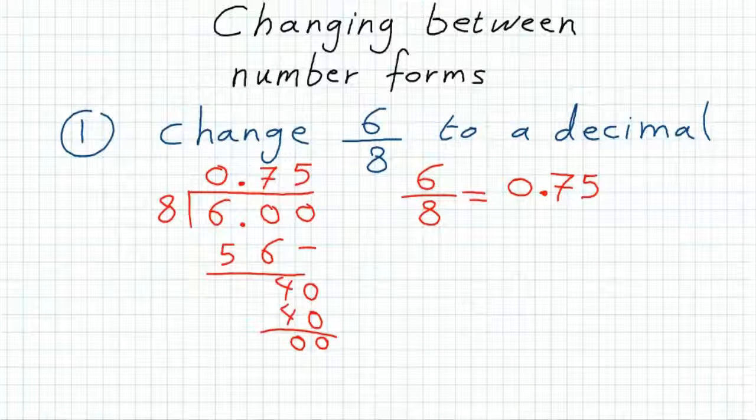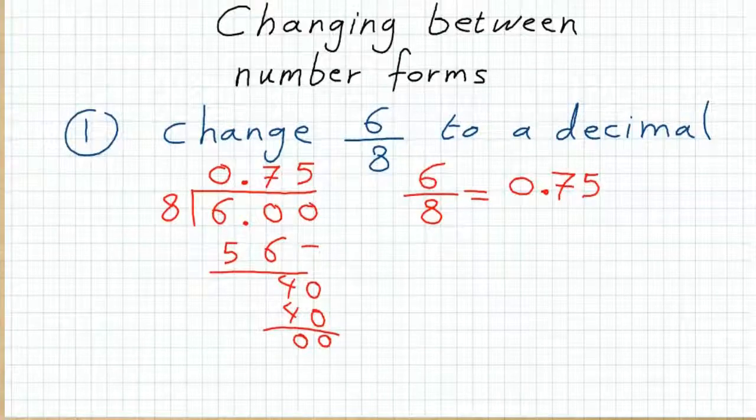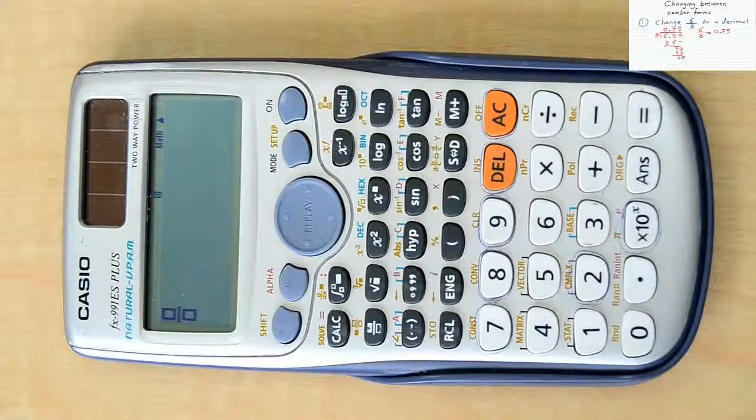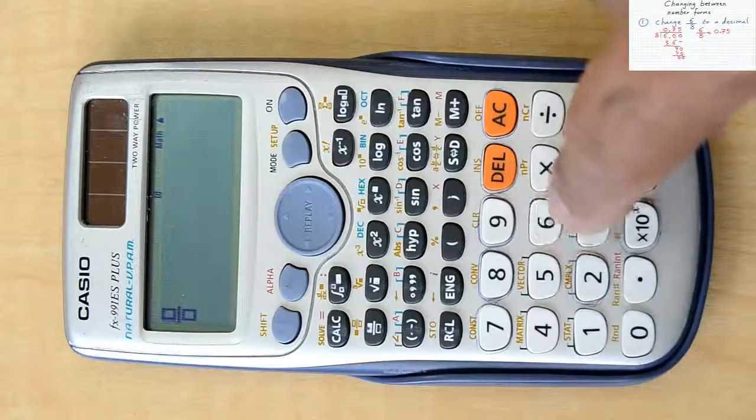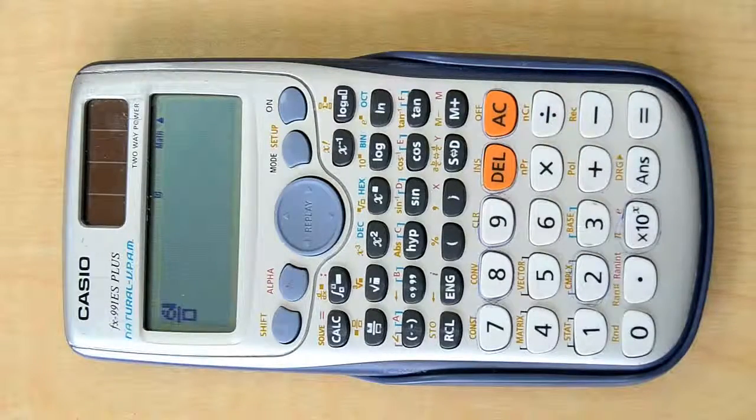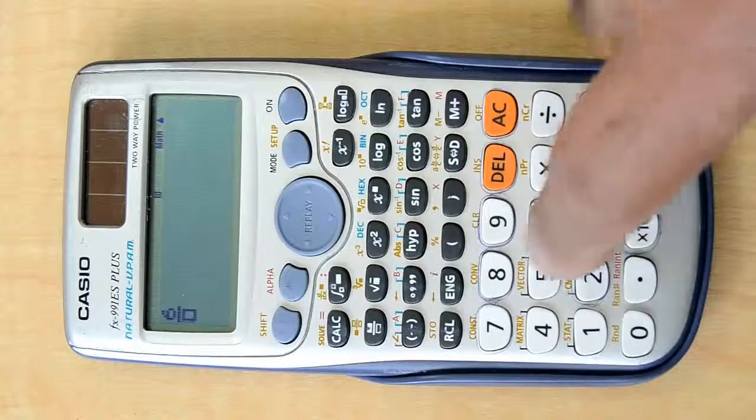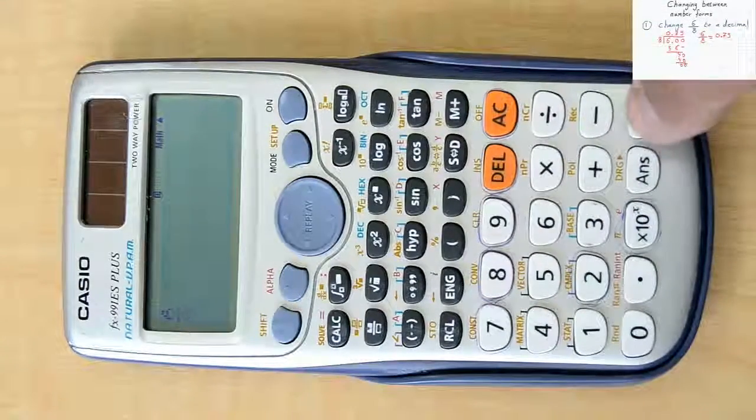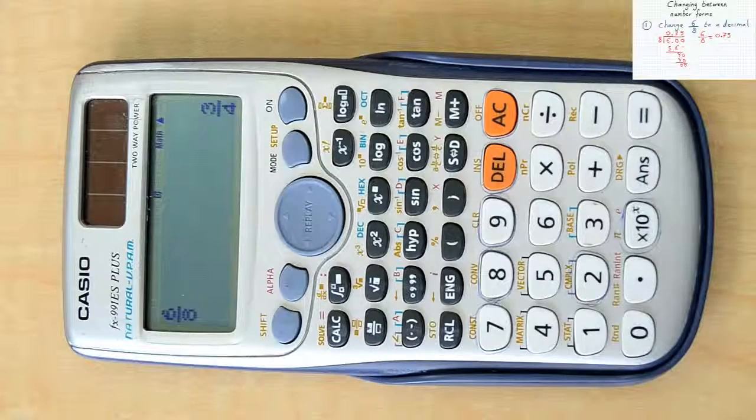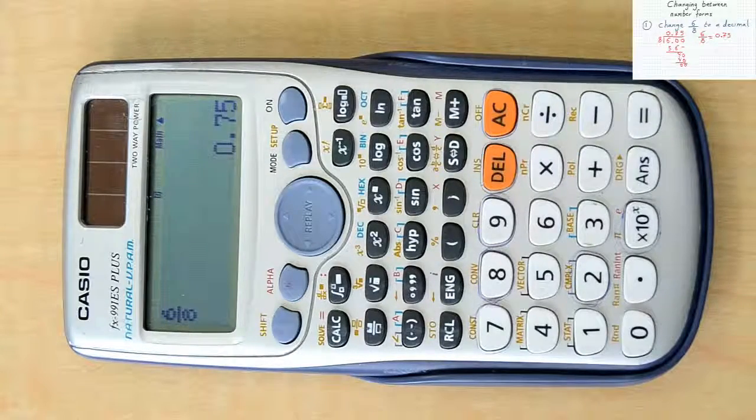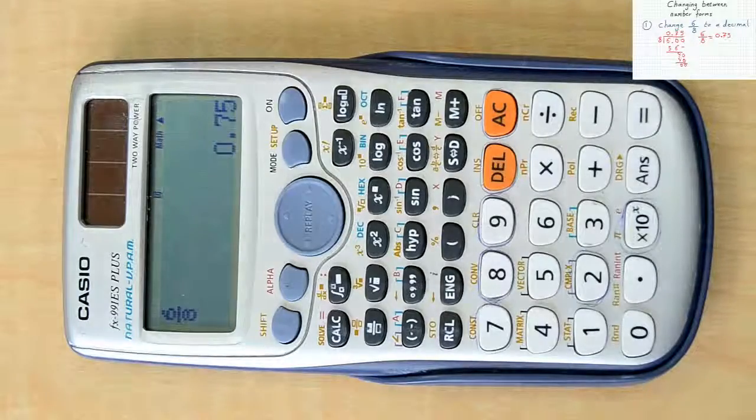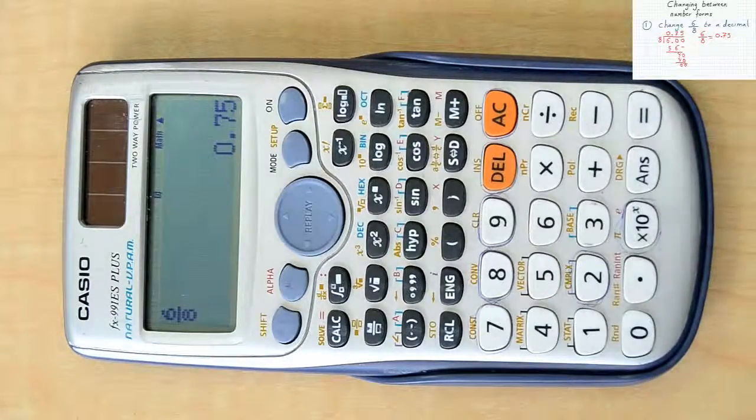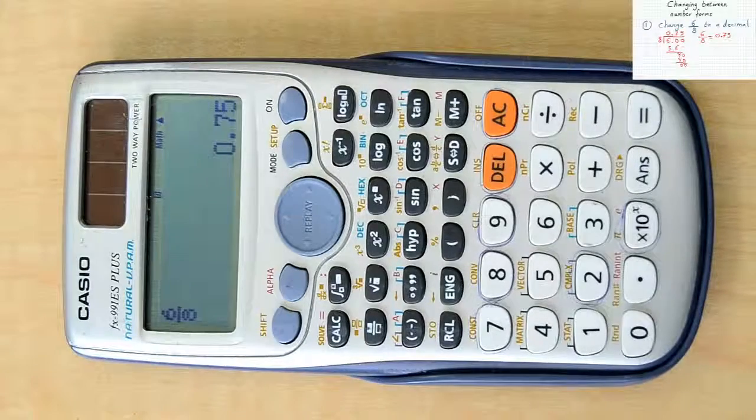But using the calculator, you will insert the fraction 6 over 8 as it is. And then press equal, then using the button SD, you will have your decimal notation for this fraction.